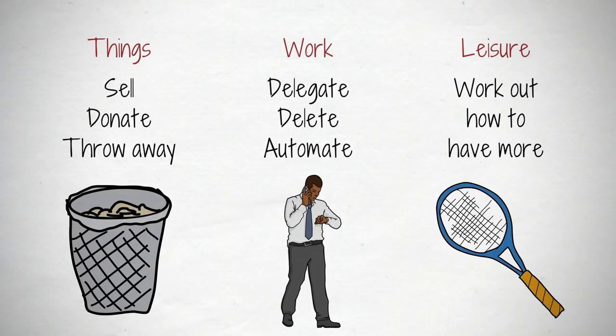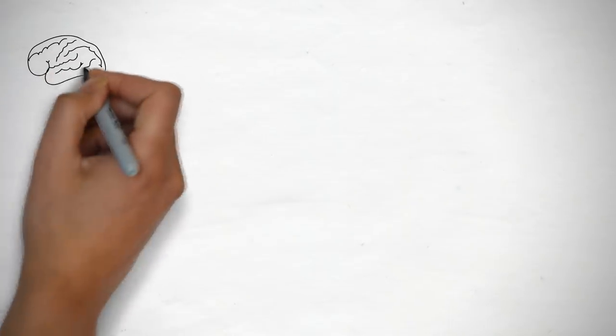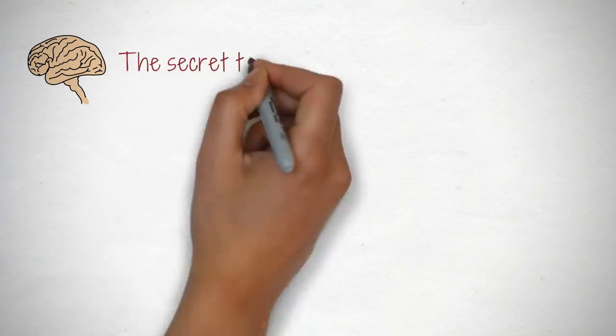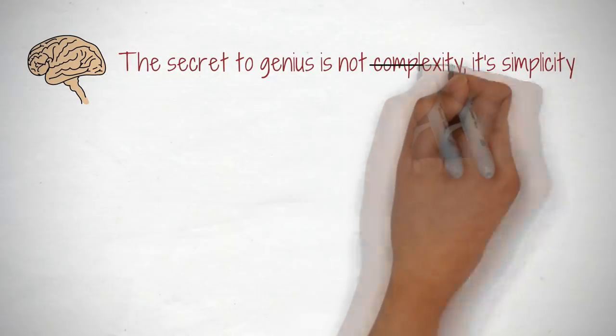That's it. There's no step three. This exercise seems too simple to be true. And yet, if you slowly and steadily start only having and doing things you love, you end up happier than ever. The 1% has understood this long ago. The secret to genius is not complexity, it's simplicity.